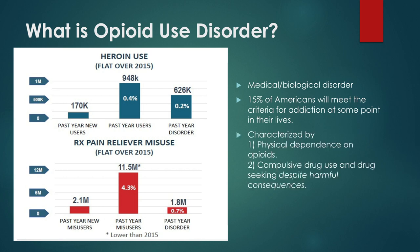Opioid use disorder is specifically characterized by two major things. If you go into the DSM or other places where we code diseases, you'll see more detailed symptoms, but the two biggest are: physical dependence on opioids — meaning the more you take them, the angrier your body gets when you don't continue. That means your tolerance goes up, so you need more to get the same pain relief or euphoria, and if you get less, you start getting withdrawal symptoms that often overlap with really strong flu symptoms or food poisoning symptoms.